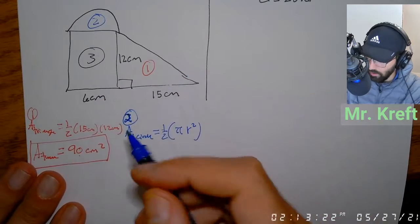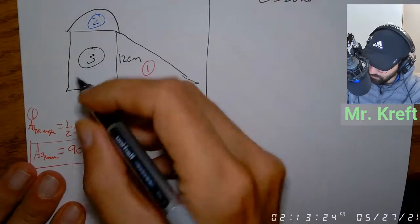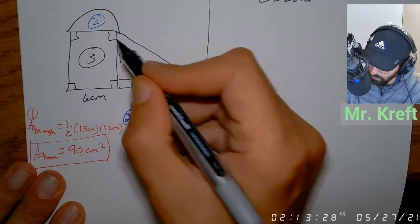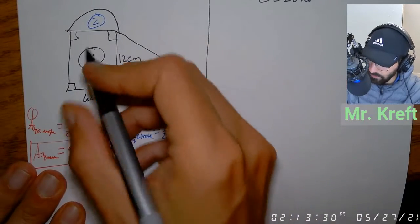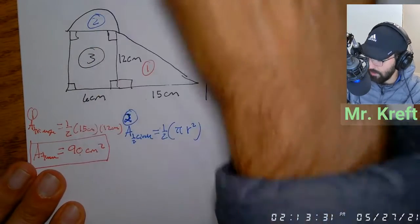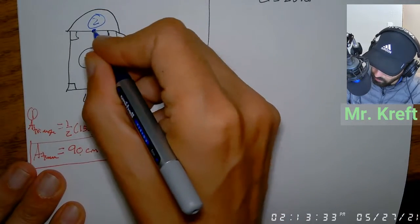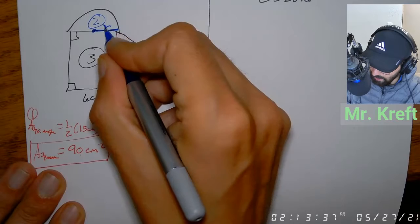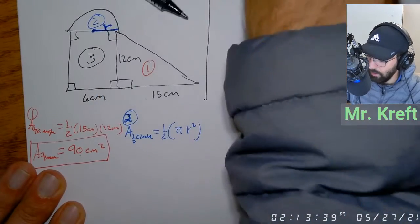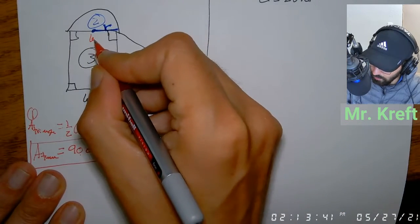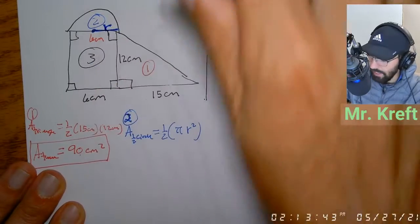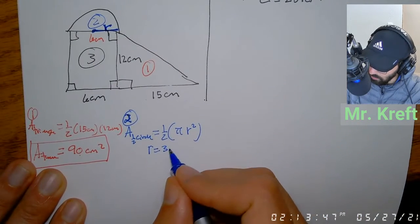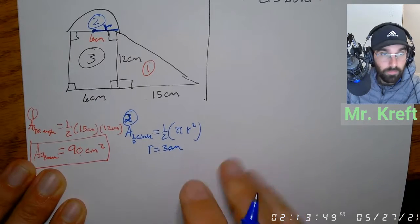We don't have the radius marked, but we do have the rectangle. If this side is six centimeters, the radius is only half of that diameter. So if the total width is six centimeters, our radius is going to equal three centimeters.